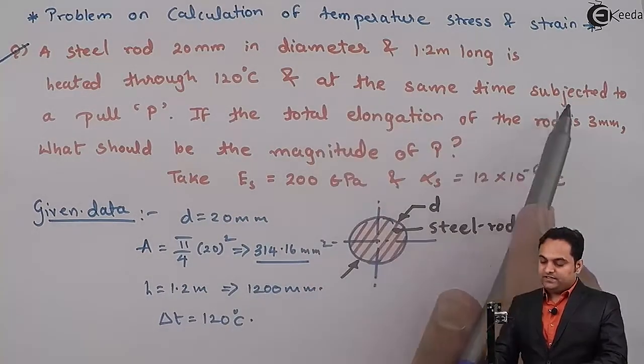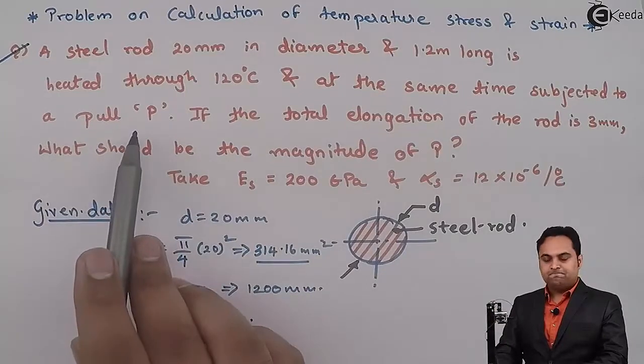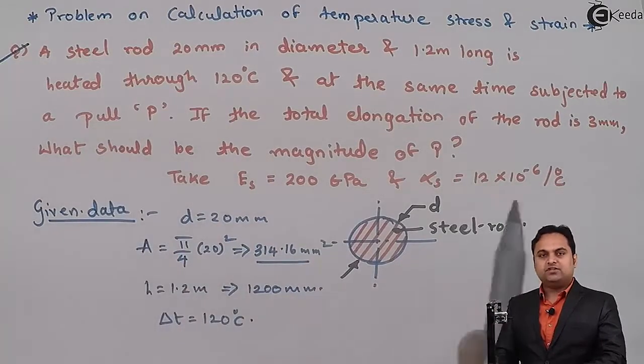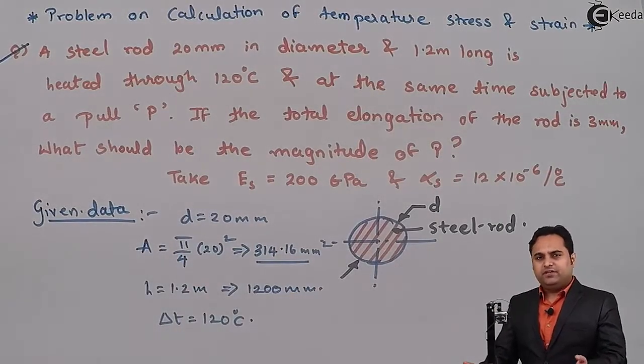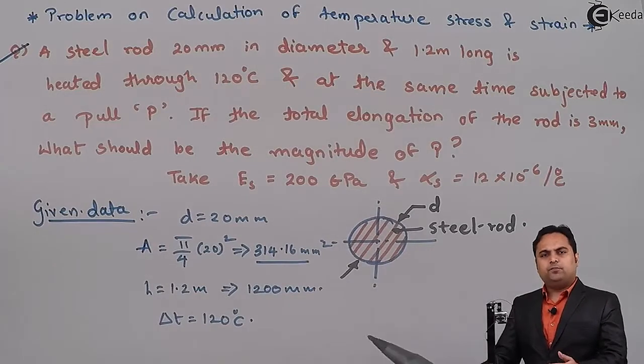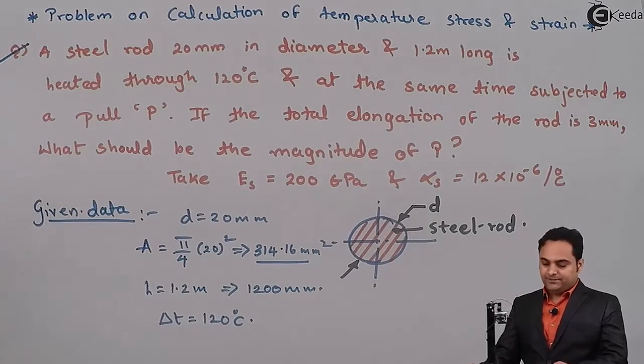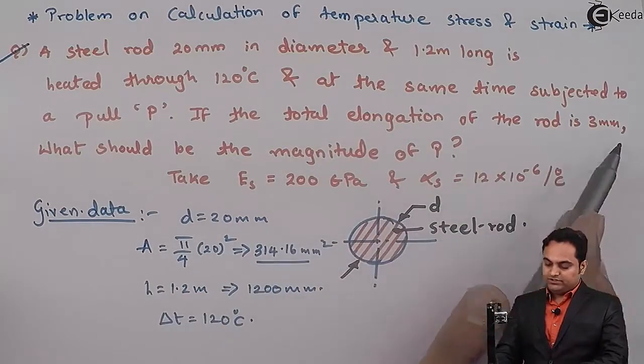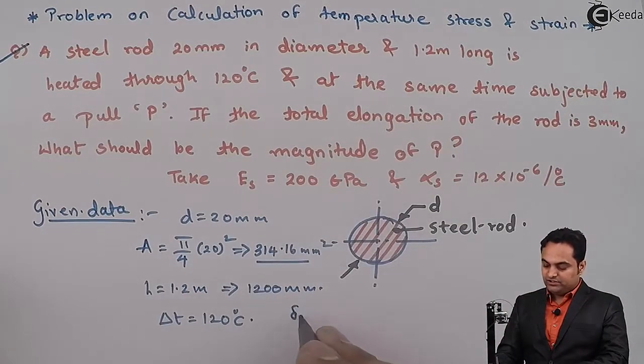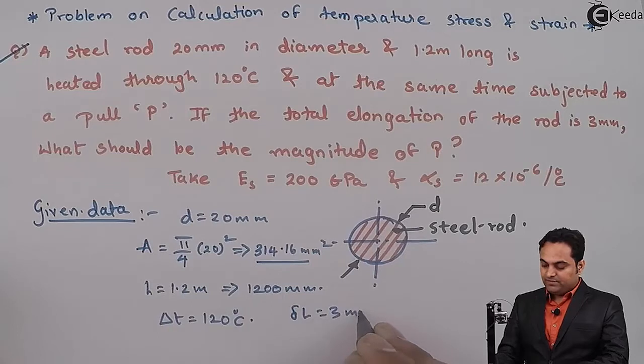Next, at the same time subjected to a pull P. So this is a case where the rod is pulled at the same time it is heated. So if the total elongation of the rod is 3 mm, total elongation is delta L that is 3 mm.